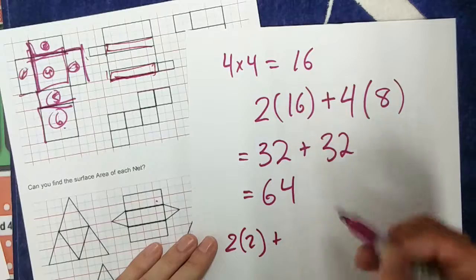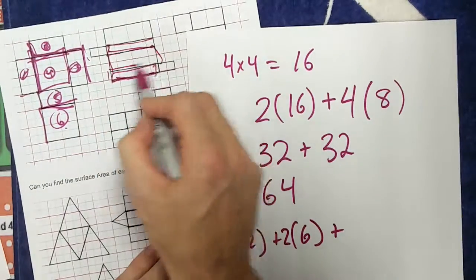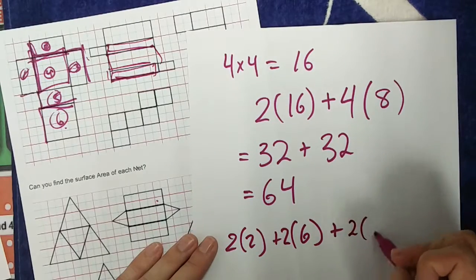1, 2, 3, 4, 5, 6, 1 by 6. So that's 2 groups of 6. And I have another 2 groups of this. And that's 2 groups of 12.